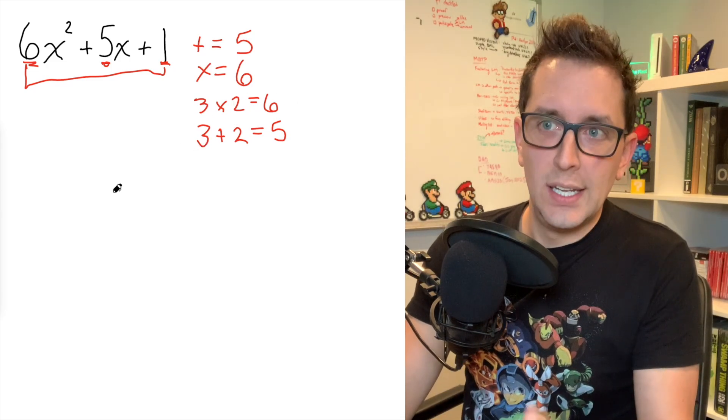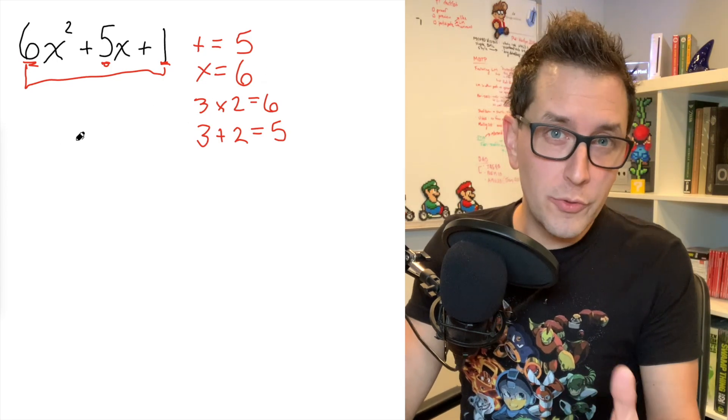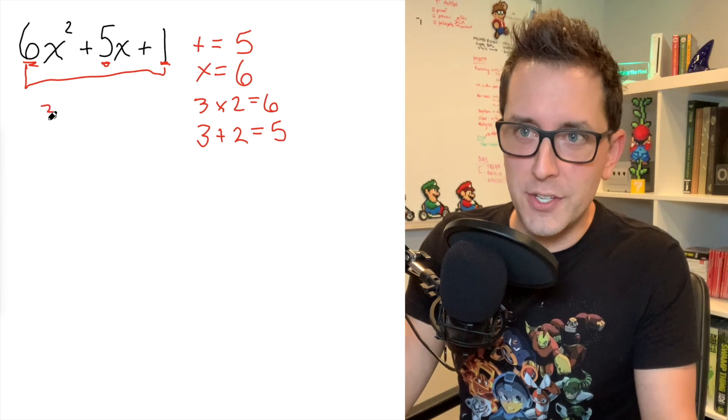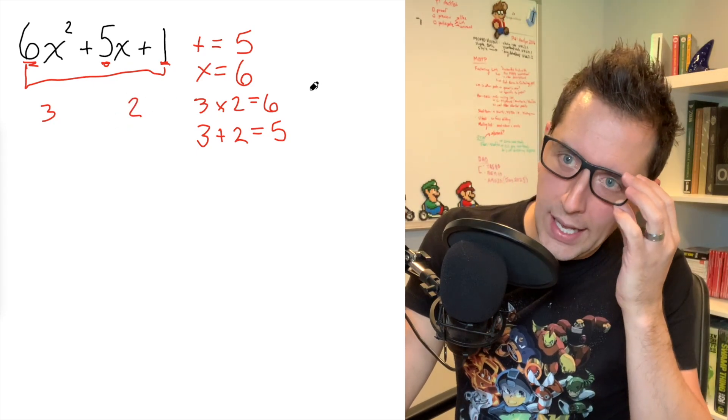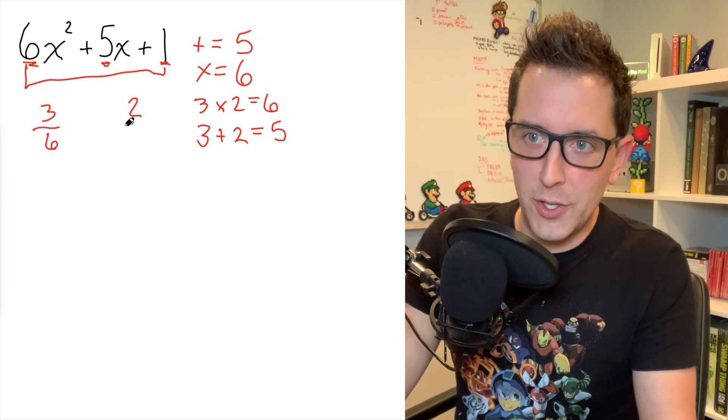Once you come up with those two numbers, this is where the real fun and really crazy strategy is going to start. What we're going to do is we're going to take those two numbers, three and two, and we're just going to write them anywhere on your page. It doesn't really matter where you write them. I like to write them just below the trinomial to keep things organized.